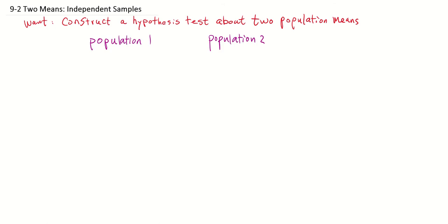This video is about section 9.2, two means independent samples. We'll construct a hypothesis test about two population means. Say we have two populations, population 1 and population 2, and we want to compare their population means, mu1 and mu2.